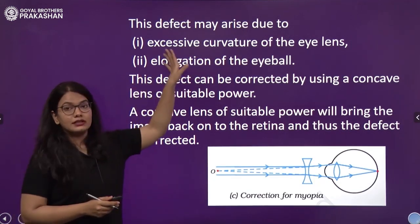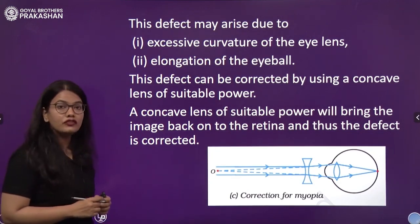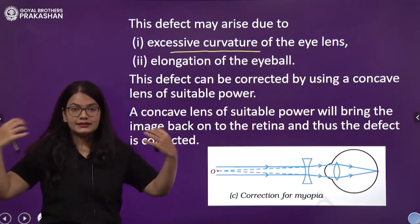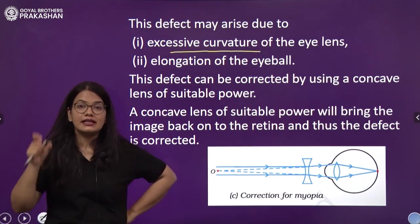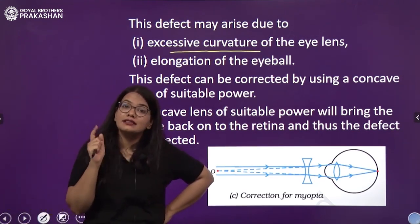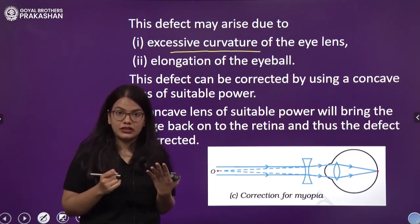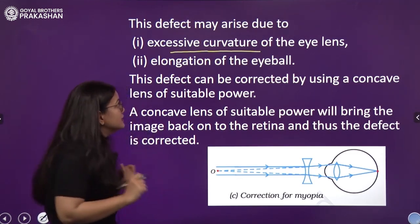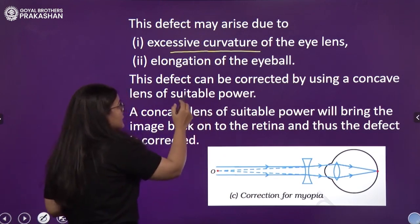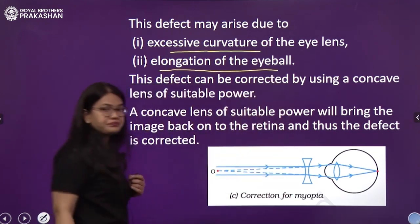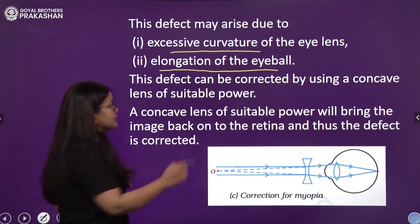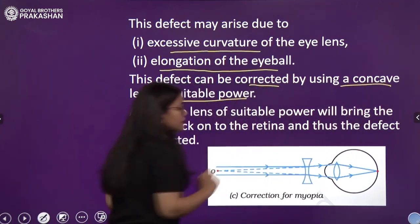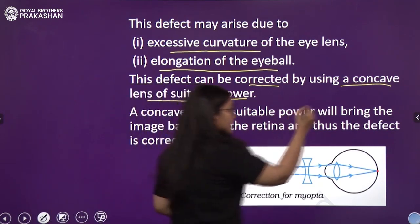This defect may arise due to two reasons: first, excessive curvature of the lens — if the curvature of the lens is very large, the lens is thick. When the lens is thick, recall the power of accommodation — to see distant objects the lens needs to be thin. Second, elongation of the eyeball. Either of these causes leads to the image forming in front of the retina.